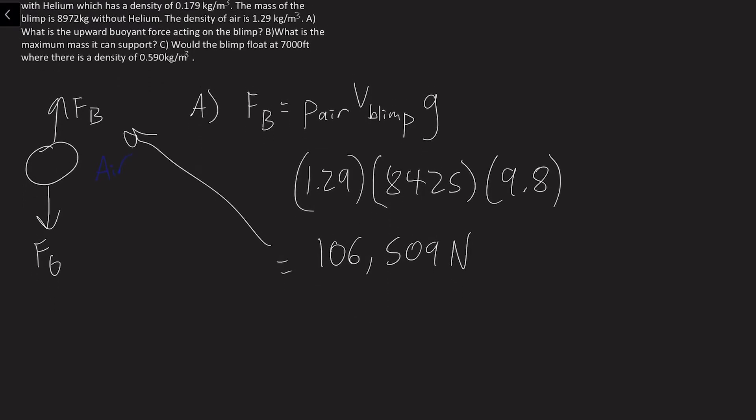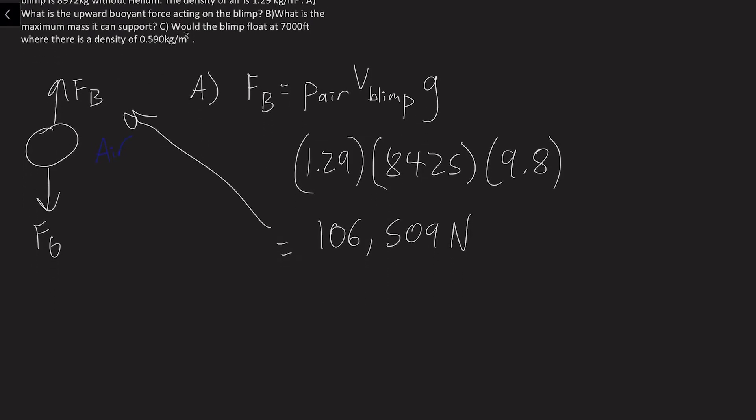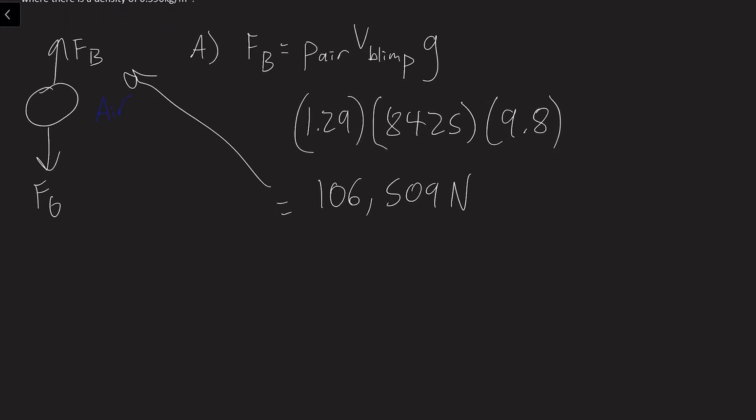So now we want to know, what is the maximum mass that this blimp can support? So let's write out a net force equation for this. So we have the buoyant force going upward, and then acting against it would be the weight, or force of gravity, of the blimp itself. So that would be the mass of the blimp times gravity.